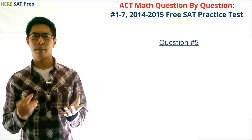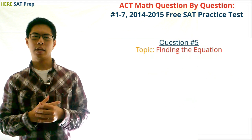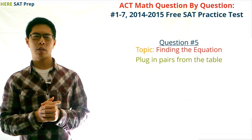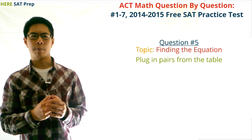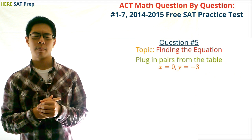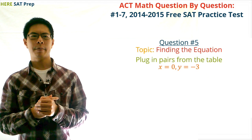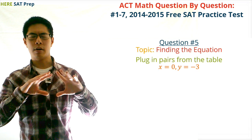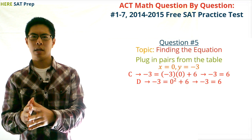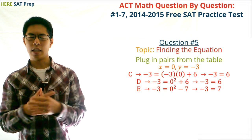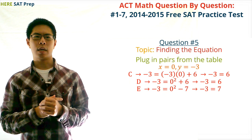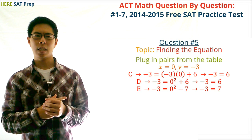Question number five. The topic of this question is finding the equation. The best way to do this question is to plug in pairs of numbers from the table into the answer choices and see what works. The quickest way is to start with the pair x equals 0 and y equals negative 3, since zero is an easy number to work with. When we plug these numbers in, we can easily eliminate choices C, D, and E.